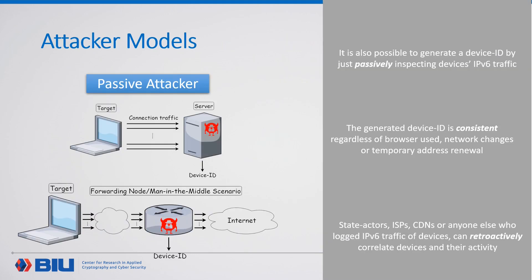Another possible attacker model is a passive attacker. This attacker is only able to inspect packets and doesn't have the ability to trigger specific traffic from the client. One example could be a server that inspects its usual IPv6 traffic with a client, or a forwarding device that acts as an eavesdropping man-in-the-middle attacker. We showed that it is possible to generate a device ID by just passively inspecting IPv6 traffic. Because the generated device ID is based on the static hash key, we get a consistent device ID regardless of browser use, network changes, or temporary address renewals. In addition, this method may also allow retroactive correlation of devices and their activity.